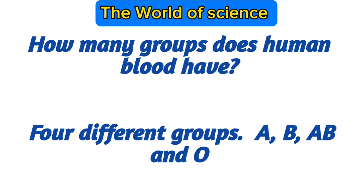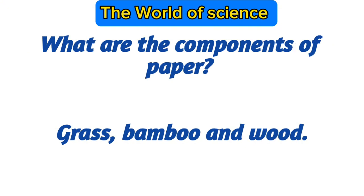Four different groups: A, B, AB, and O. What are the components of paper? Grass, bamboo, and wood.